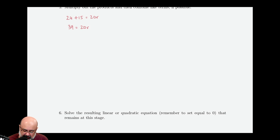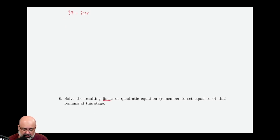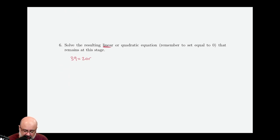Now the next thing is to solve the resulting linear or quadratic equation. This is a linear equation because the highest power is 1. So how do we solve linear equations? We just isolate the variable and try to get it by itself. So if 39 equals 20r, we divide both sides by 20. So we get 39 over 20 equals r.